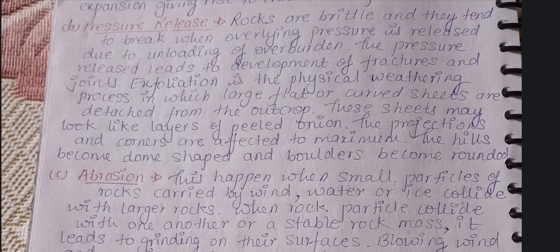Rocks are brittle and they tend to break when the overlying pressure is released due to unloading or removal of the overburden. Pressure release leads to the development of fractures and joints. Exfoliation is the physical weathering process in which large flat or curved sheets are detached from the outcrop. These sheets may look like layers of a peeled onion. The projections and corners are affected to the maximum, hills become dome-shaped, and boulders become rounded.